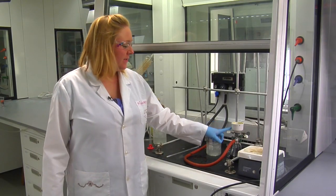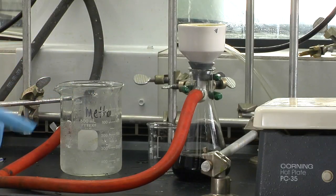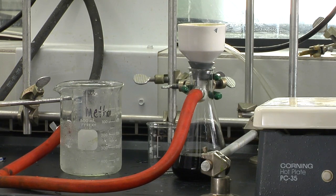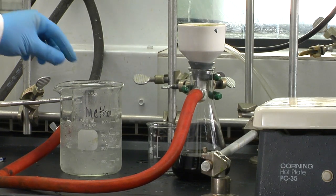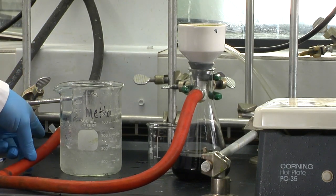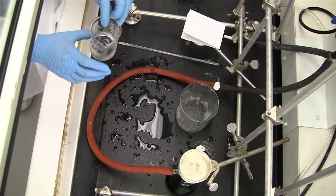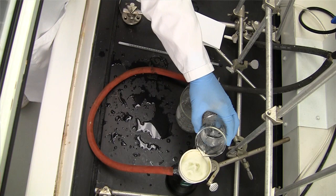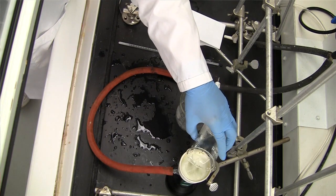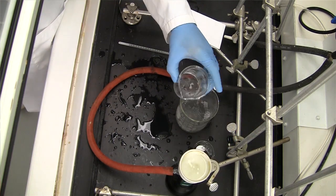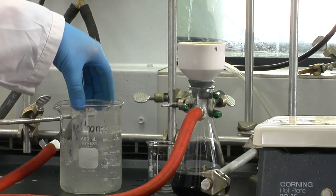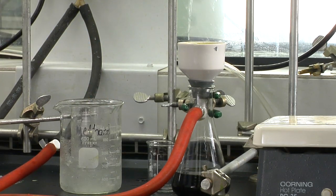Once you've filtered off the liquid from your solution, we're going to wash with some chilled methanol. Stop the suction by turning the stopcock valve and add 10 mils of your chilled methanol. Let this stand for a few minutes before reapplying suction.